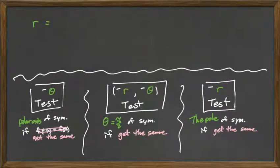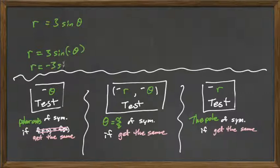So this time let's try it with sine, 3 sine theta. Okay, let's do the theta test, the negative theta test. If I plug a negative theta in there, what happens? I go 3 sine and I negative theta. What do I get? R equals negative 3 sine theta. Right? We plug a negative inside a sine and it changes the answer. So this one fails. It fails that test.